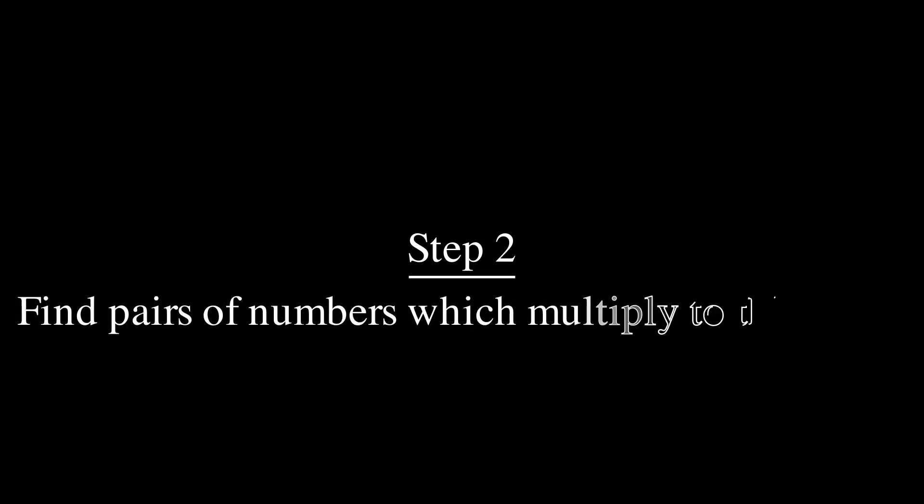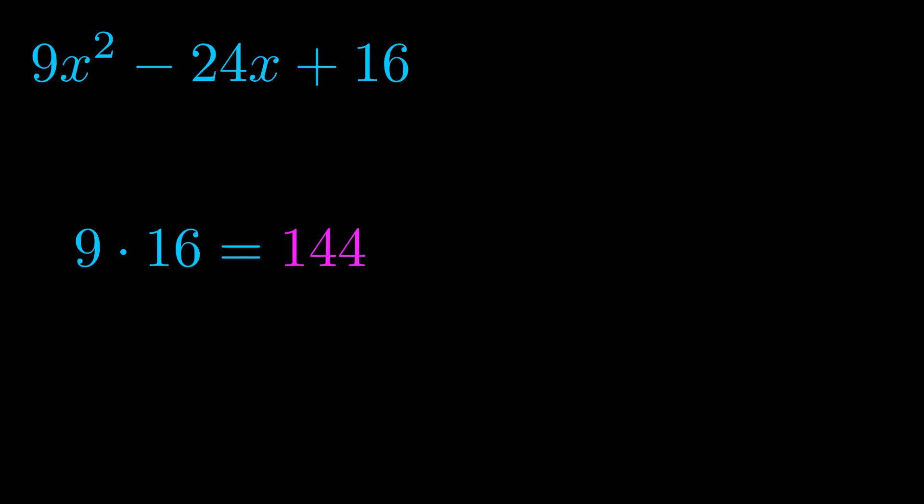Step two is to try to find all of the pairs which multiply to this number. Now it turns out you don't really need to find all of them but go ahead and write down as many numbers as you can that multiply to the magenta value for now. Pause the video and resume when you're ready to continue.